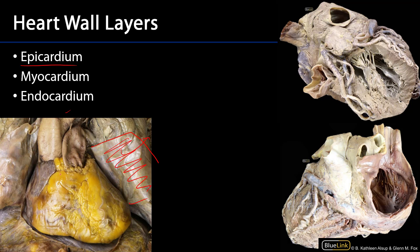Deep to that epicardium, we'll have epicardial fat, as we can see throughout here. We'll also have some blood vessels — I can see a couple taking a rather tortuous route deep to that epicardium. On the right here, we can see a dissected heart with that epicardium removed, and we can see some of those vascular elements that would have cruised along deep to the epicardium.